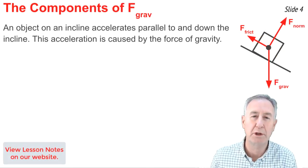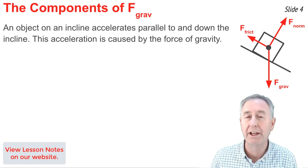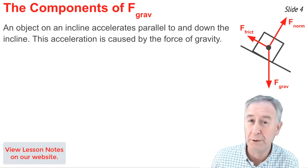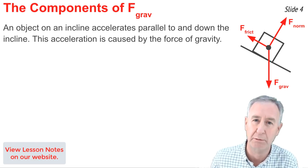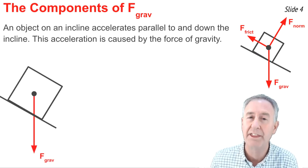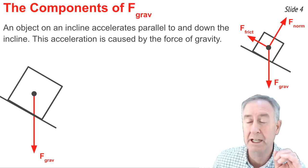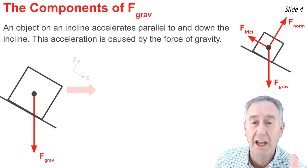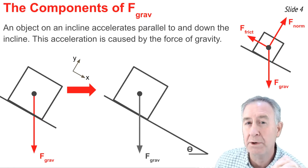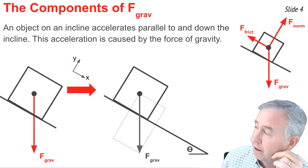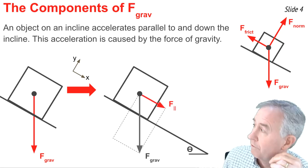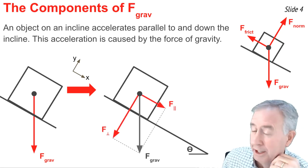An object on an inclined plane accelerates down the incline and parallel to it. This acceleration is caused by the force of gravity. The problem is, if you look at the free-body diagram, the force of gravity is not directed down and parallel to the inclined plane. So what we need to do is think in terms of the components of the force of gravity directed in those directions, using axes tilted parallel and perpendicular to the inclined plane. We take the force of gravity and inscribe it as the diagonal of a parallelogram, then draw its components — one parallel to the inclined plane and the other perpendicular to it.